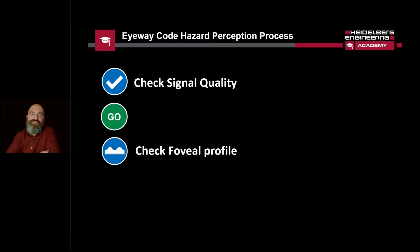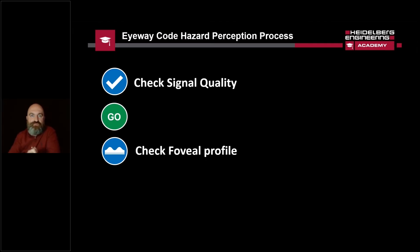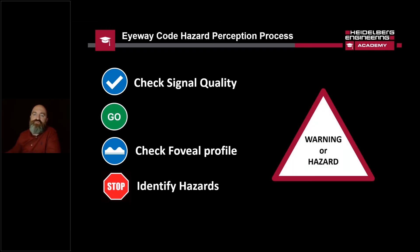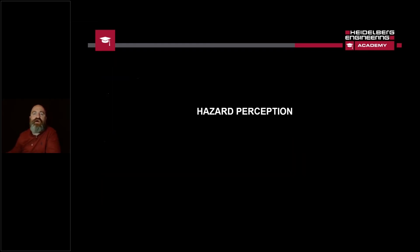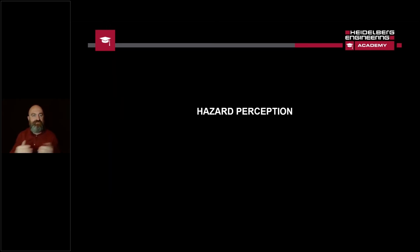As long as we've got good signal quality, we'll move on. The next part of the process is checking the foveal profile. Crucially, the reason we do this, particularly in medical retina, is we want to make sure we are scanning in the right place — over the macula, the central part of the retina, which is essential for facial recognition and reading. Once we've established those two parts of the process, that's where we stop and we look for our hazards. I'm now going to do that with a case before I pass over to Mark.